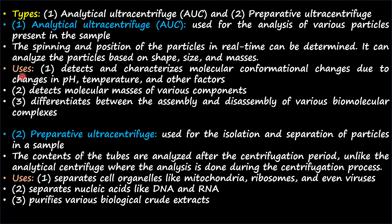The uses of AUC include: it detects and characterizes molecular conformational changes due to changes in pH, temperature, and other factors; it detects molecular masses of various components; and it differentiates between the assembly and disassembly of various biomolecular complexes. For example, you can check whether the small ribosomal subunit and large ribosomal subunit are assembled or disassembled using AUC.